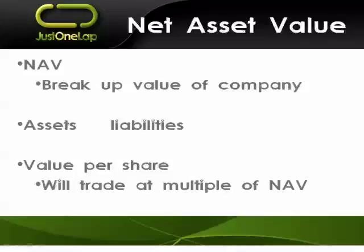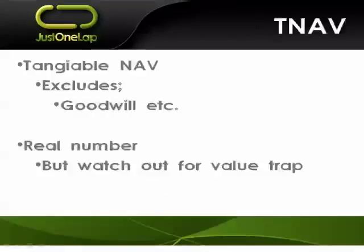The problem with net asset value is it's literally assets less liabilities - but can we actually turn all those assets into cash? Some assets can't be turned into cash very easily. That's why we get to tangible net asset value. Tangible means those things we can turn into cash. What we strip out from tangible net asset value is goodwill on the asset side. Does a brand have value? Sure. But is it easy to pin that value down or realize it? Probably not.